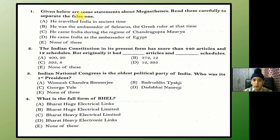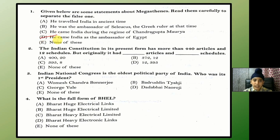Given below are some statements about Megasthenes. Read them carefully to separate the false one. The answer is D — he came to India as the ambassador of Egypt.